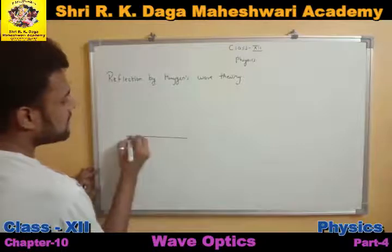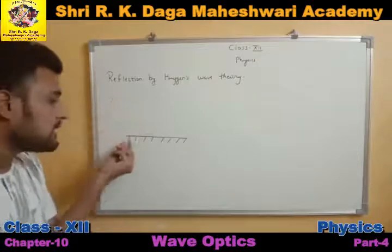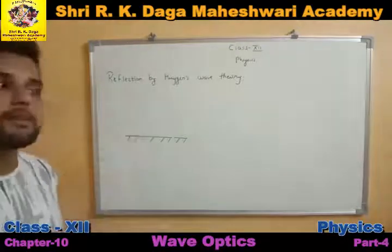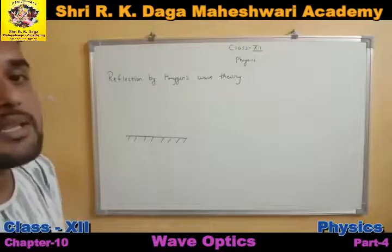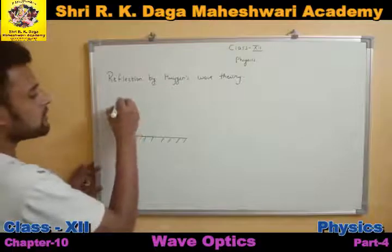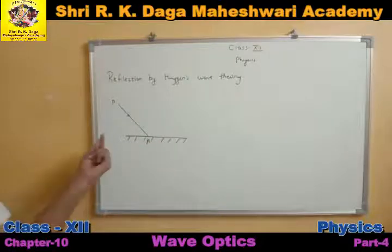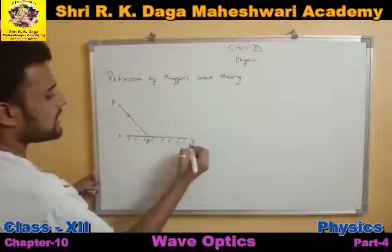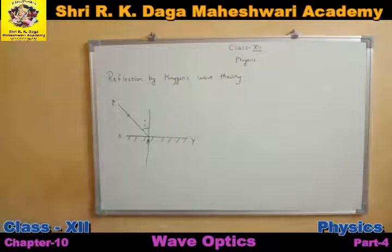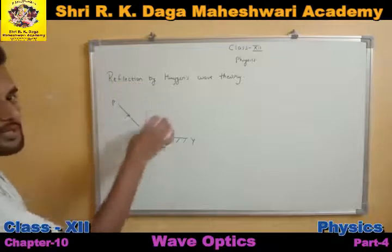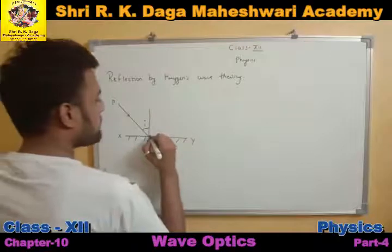We know that whenever a light ray is incident on a plain polished surface, it will get bounced back. Whenever a light ray hits a plain smooth surface — let us name this surface XY — and if we draw a normal here, this will be the angle of incidence. When the light ray is coming from infinity, a parallel wavefront is formed. When the light ray is incident on the XY surface in this way, a wavefront will be formed here.